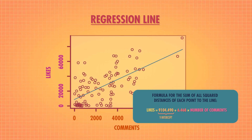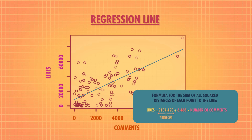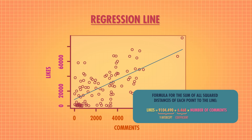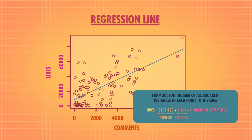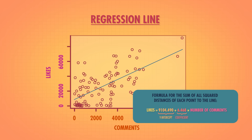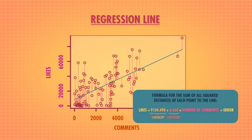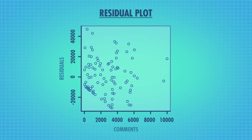Often the intercept might not make much sense. In this model, it's possible that you could have a video with zero comments, but a video with zero comments and 9,104 likes does seem to conflict with our experience on YouTube. The slope, also known as the coefficient, tells us how much our likes are determined by the number of comments. Our coefficient here is about 6.5, which means that on average, an increase in one comment is associated with an increase of about 6.5 likes. But there's another part of the General Linear Model — the error, also called residuals. The residual plot looks like this, and we can tell a lot by looking at its shape.